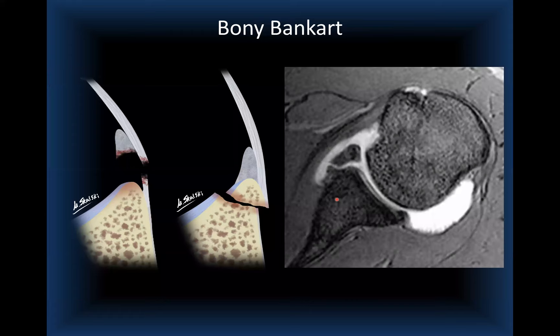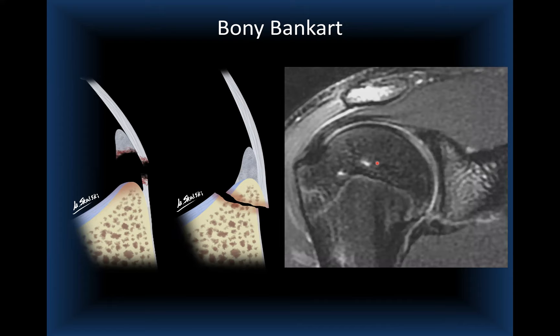A beautiful diagram from Dr. Skalski shows both soft tissue and bony Bankart variants. With the bony Bankart, there is a fracture of the anteroinferior glenoid rim. An old axial gradient echo image and a coronal image demonstrate the Bankart fracture. A case courtesy of Dr. Roar Petersen from Norway shows a skeletally immature girl who fell while ice skating and dislocated her shoulder anteriorly, with a shallow Hill-Sachs and a bony Bankart fracture of the anterior glenoid rim.